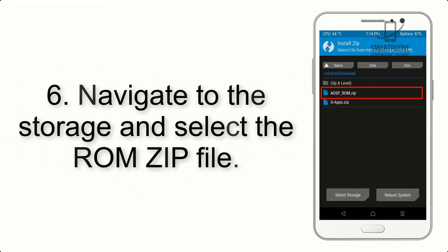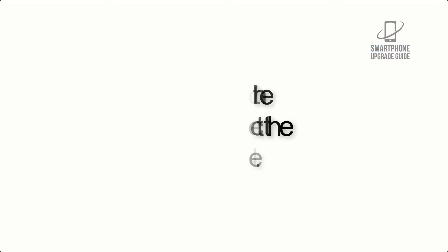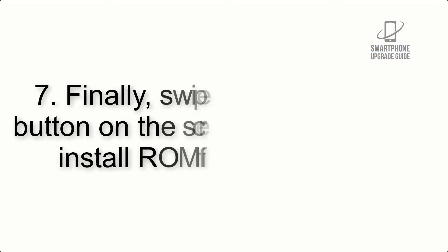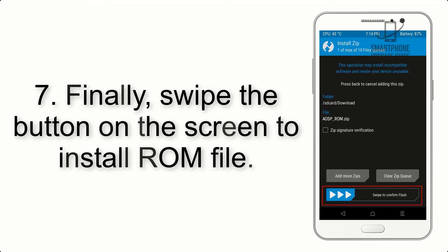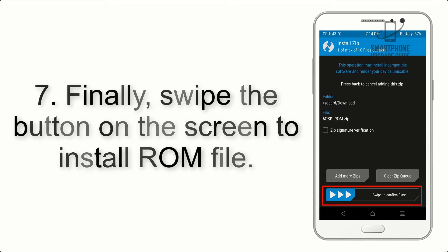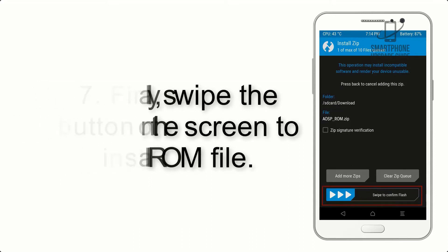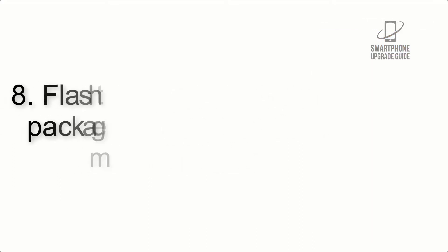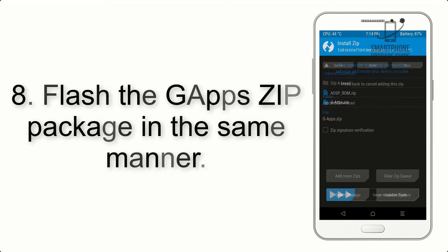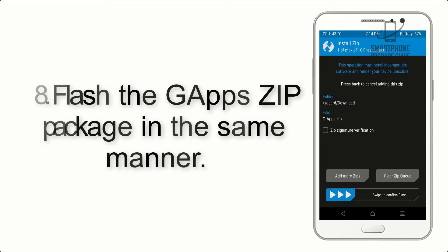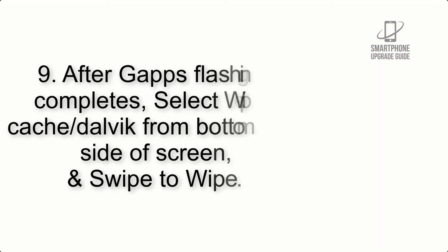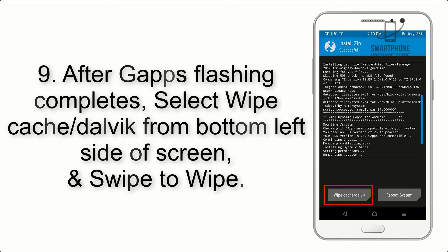Step 6: Navigate to the storage and select the ROM zip file. Step 7: Swipe the button on the screen to install the ROM file. Step 8: Flash the Gapps zip package in the same manner.